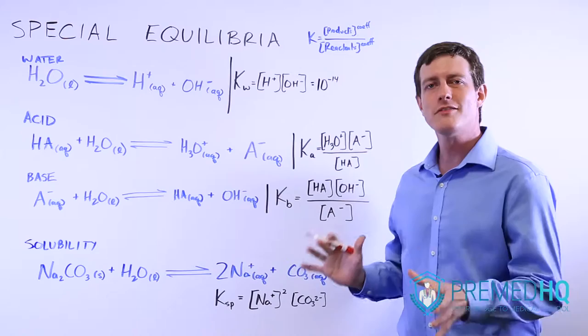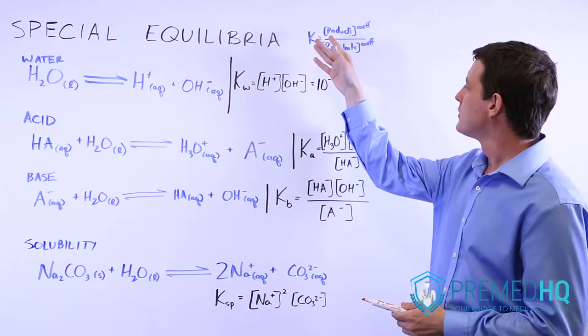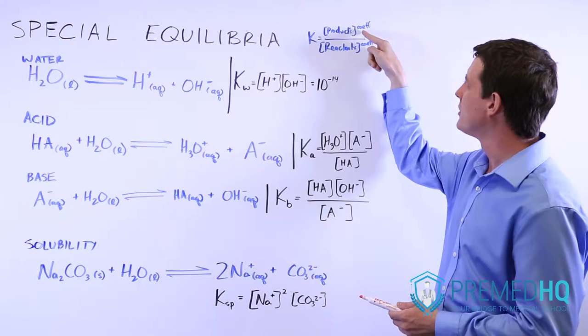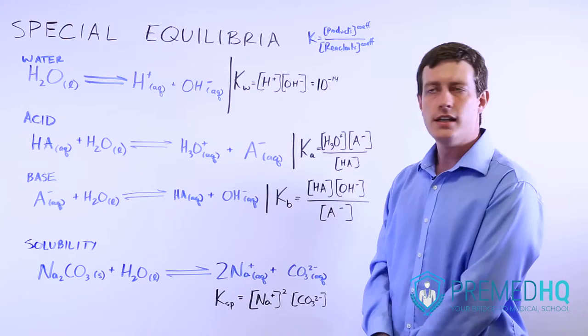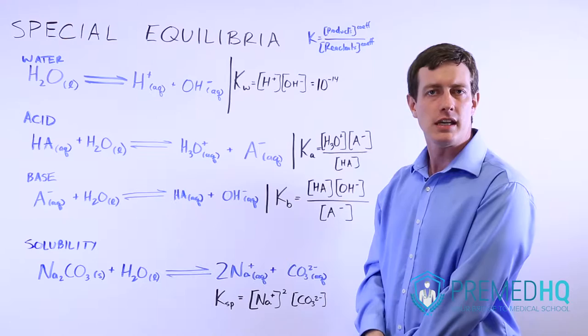Working from our understanding that K, an equilibrium constant, is always represented by the concentration or molarity of the products raised to their stoichiometric coefficients over the concentration or molarity of the reactants raised to their coefficients, we can get a few special K values that tell us about the qualities of an acid, base, or a substance that is being dissolved.